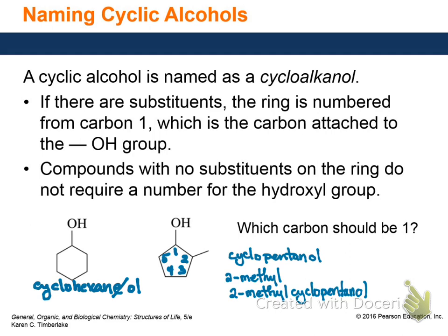The common name for a six-membered ring alcohol is cyclohexyl alcohol. Rings with branches don't usually have common names — simple structures like straight chains or unsubstituted rings typically have common names. Complex molecules like estrogen have common names because the systematic names are extremely long and unwieldy.